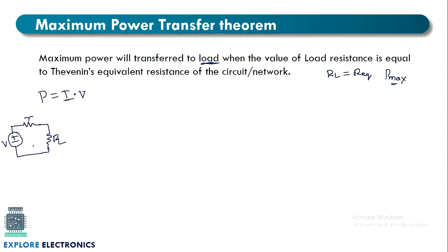Considering this circuit, because of the polarity of the supply voltage, the current flows in this direction — let me call it IL. So this is IL and this is RL. We can write the expression for power P as IL into V. We can also write this power expression as IL² into RL.